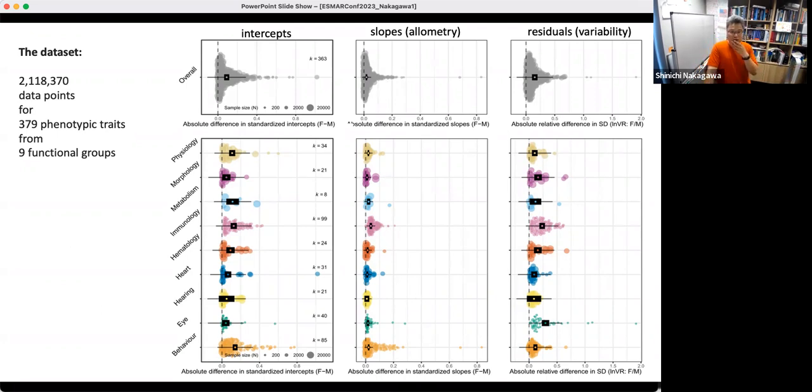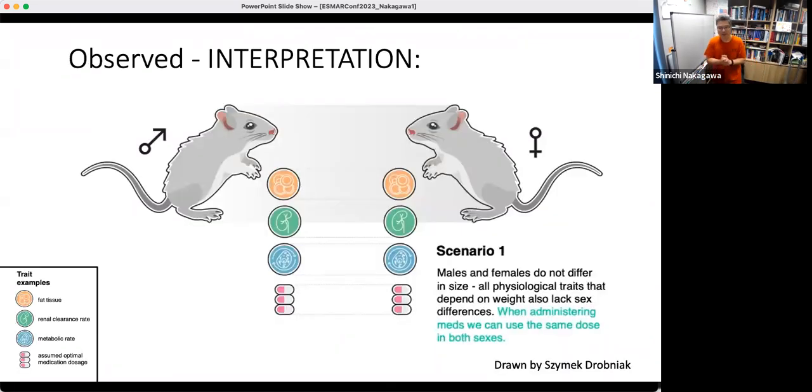I'll explain the implication. Many cases, many traits, not all traits, many traits, slopes are different. What does it mean? This is a scenario. This is a beautiful drawing done by Shemesh Drobniak. You saw him in the acknowledgement. Male and female are exactly the same. Those three traits among the many traits we looked at, fat tissue, retinol clearance rate, metabolic rate, if they're exactly the same size, on average you can give the same dose of drugs, that's no problem. But that's not true.